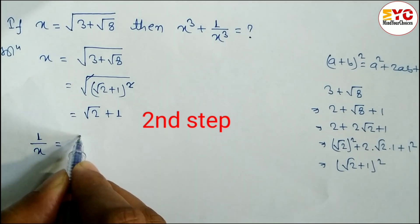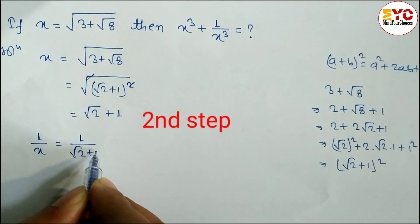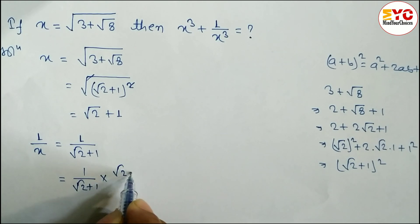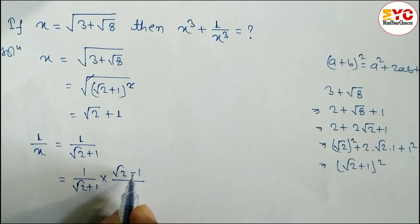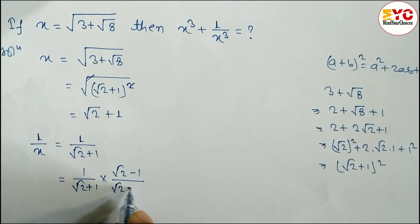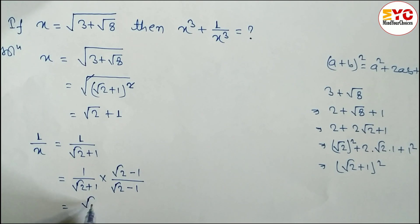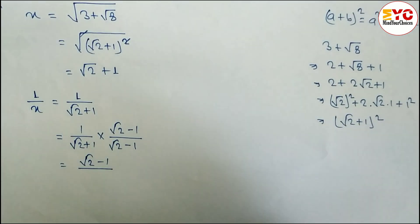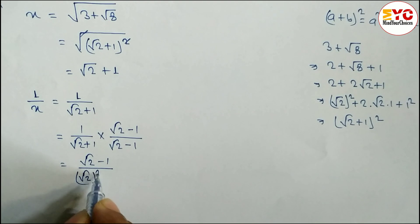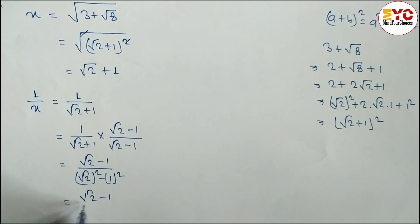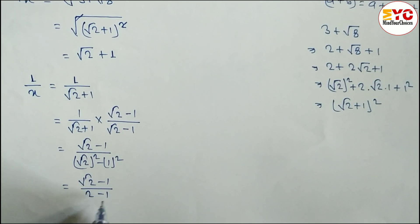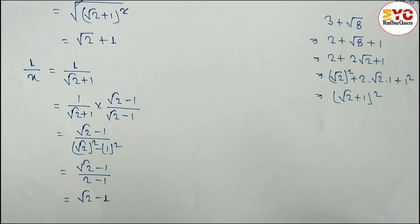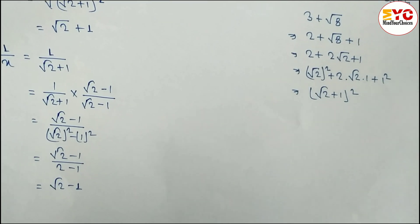In the second step, we find 1/x. We have 1/x = 1/(√2 + 1). Now let's rationalize it: multiply by (√2 − 1)/(√2 − 1), changing the sign. The numerator gives √2 − 1. The denominator is in the form (a + b)(a − b) = a² − b², so we get (√2)² − 1² = 2 − 1 = 1. Therefore, 1/x = √2 − 1.